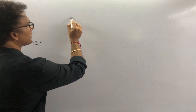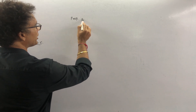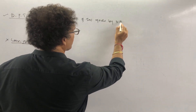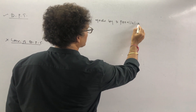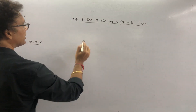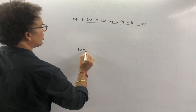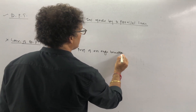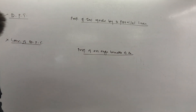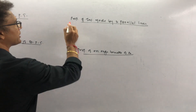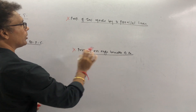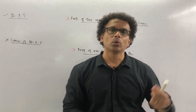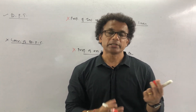This is the property of intercept made by three parallel lines. Then we get the property of an angle bisector of a triangle.